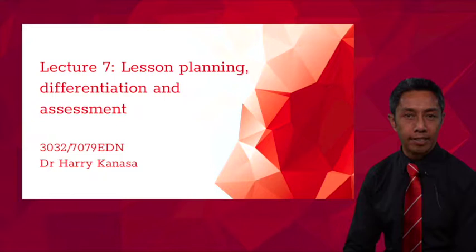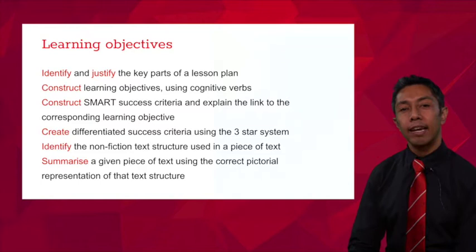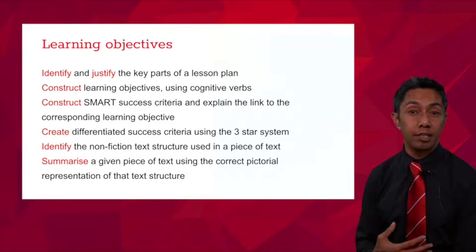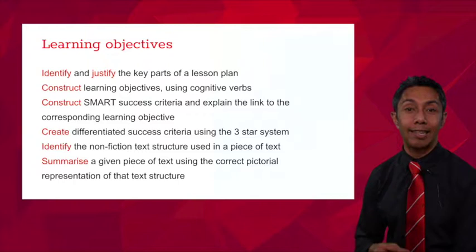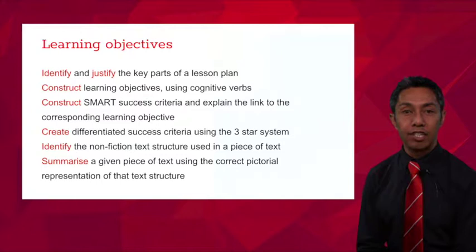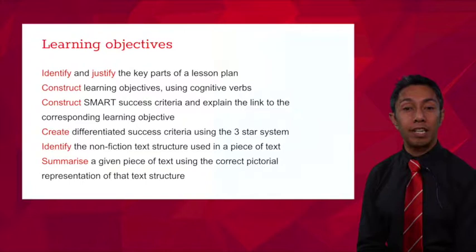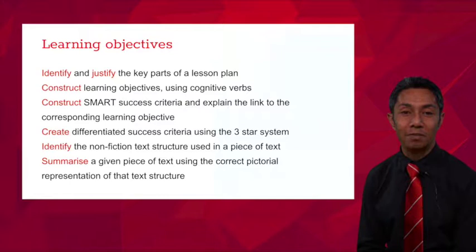Hi and welcome to lecture 7 of 3032 and 7079 EDN on lesson planning, differentiation and assessment. In this lecture we're going to cover these learning objectives. By the end you should be able to identify and justify the key parts of a lesson plan, write learning objectives using cognitive verbs, construct success criteria and explain the link they have to the learning objective, create differentiated success criteria using the three star system, identify non-fiction text structures, and summarise a given piece of text using the correct pictorial representation of that text.